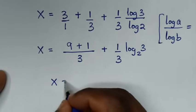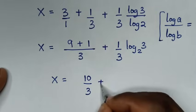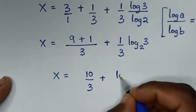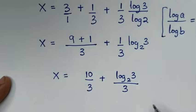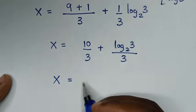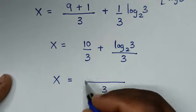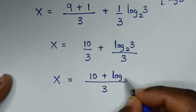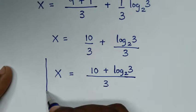Then x is equal to 9 plus 1 over 3, which is 10 over 3, then plus log of 3 base 2 over 3. Since log 3 over log 2 is the same as log base 2 of 3, we apply the change of base rule. So the final answer is x is equal to 10 over 3 plus log base 2 of 3 over 3.